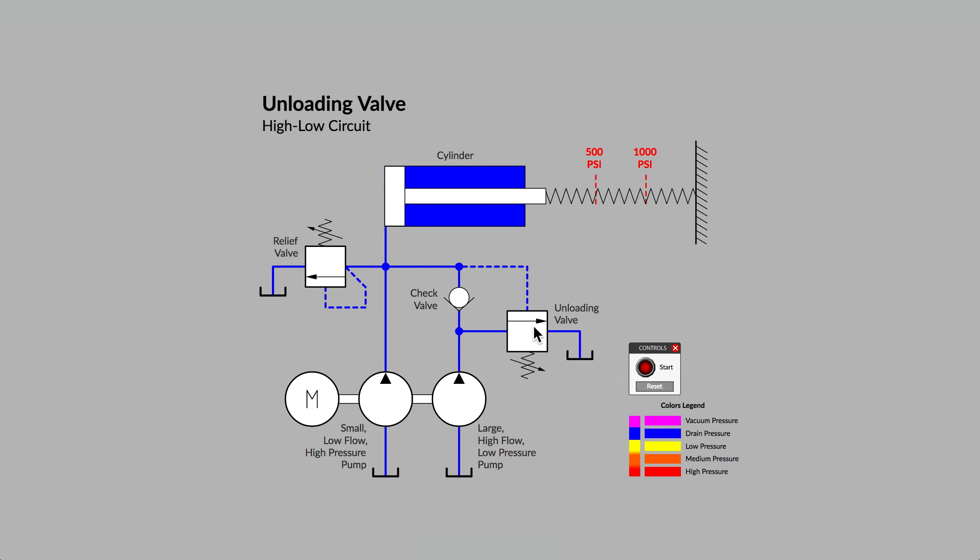The symbol for an unloading valve is quite similar to the symbol for a pressure relief valve. They are both normally blocking or normally closed off valves. Springs are used to keep the valves in their closed position. They are both waiting for a high enough pressure value on the dashed pilot line to cause them to open and pass flow.